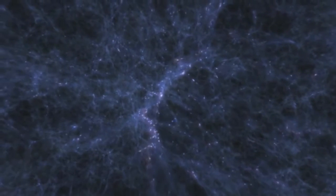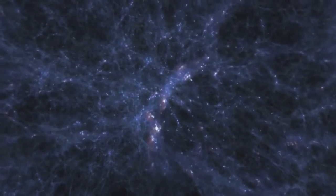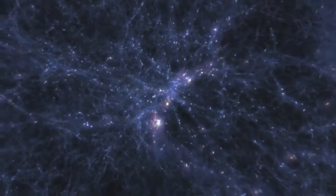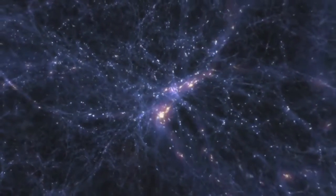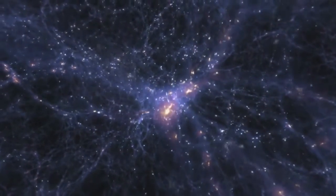When the universe was about half its present age, about 7 billion years ago, galaxies crashed together more frequently, and these collisions produced gas-rich galaxies with heavily obscured black holes.